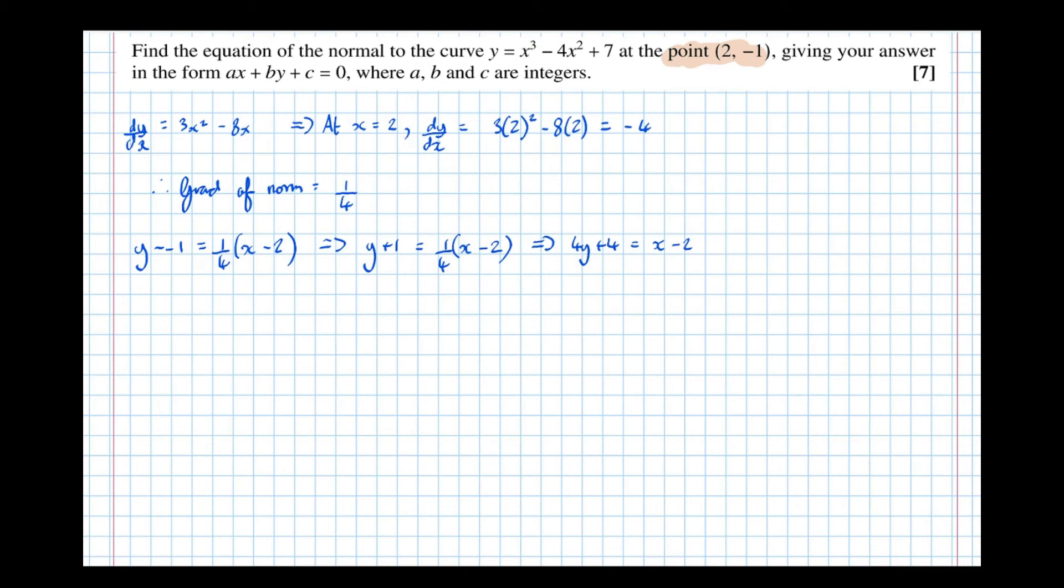Then getting it in required form, which means that, so take everything over the right hand side, x - 4y, take 4 over the other side as well. So, -6 = 0.